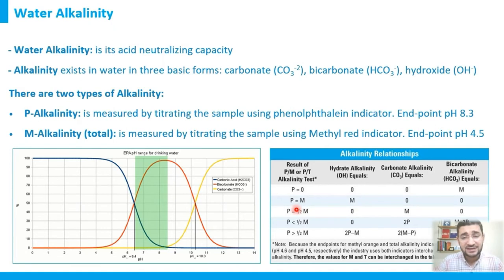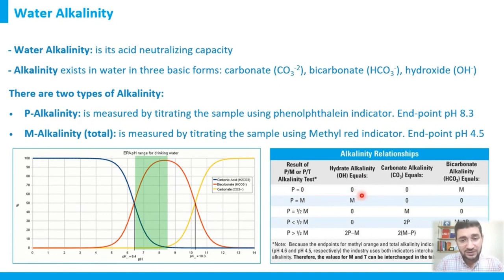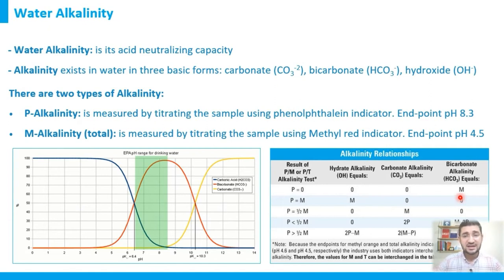Now let's look at alkalinity relationships. If P-alkalinity equals zero, then pH is less than 8.3, meaning there are no hydroxide or carbonate ions expected in the water. In this case, all alkalinity comes from bicarbonate. The total M-alkalinity is entirely due to bicarbonate (HCO₃⁻).